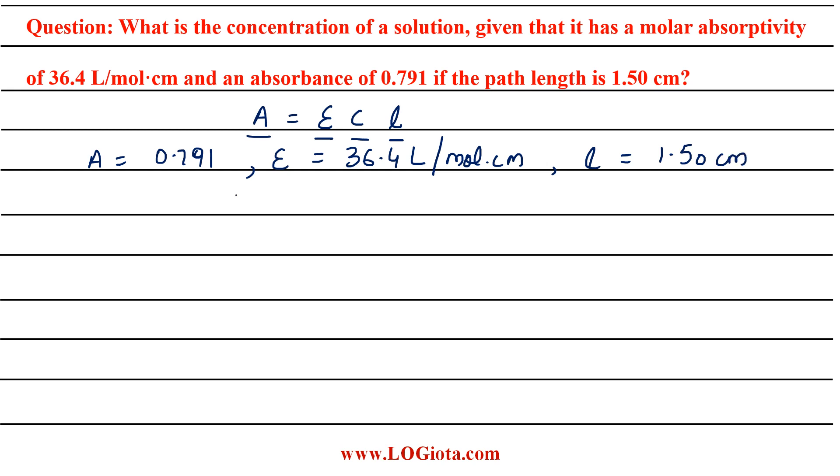So we need to calculate C, so C will be equal to A over epsilon L. So the value of A is 0.791, epsilon is 36.4 and L is 1.50.